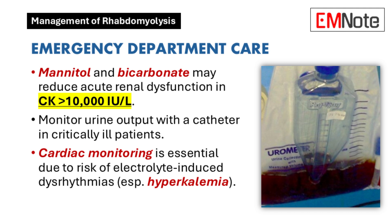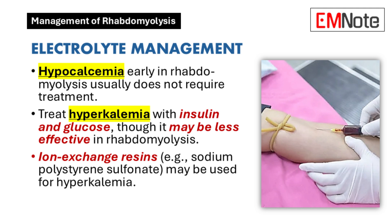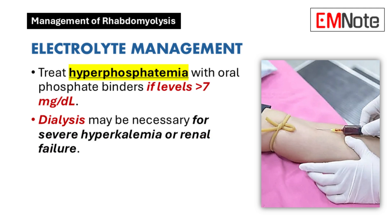A urinary catheter should be placed in critically ill patients or those with acute kidney injury to monitor urine output. Cardiac monitoring is essential due to the risk of electrolyte-induced dysrhythmias. Hemodynamic monitoring may be necessary for patients with heart disease, pre-existing renal disease, or advanced age to avoid fluid overload. Hypocalcemia in the early stages of rhabdomyolysis typically does not require treatment unless there are signs of hyperkalemia-induced cardiotoxicity or severe hypocalcemia. Hyperkalemia, which is most severe in the first 12 to 36 hours after muscle injury, may require treatment with insulin and glucose, though this may be less effective in rhabdomyolysis-induced hyperkalemia. Ion-exchange resins, such as sodium polystyrene sulfonate, may be used. Hyperphosphatemia should be treated with oral phosphate binders when serum levels exceed 7 mg per deciliter. Dialysis may be necessary in severe cases.